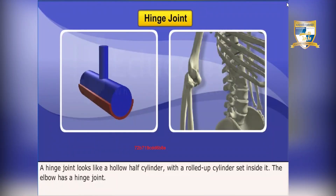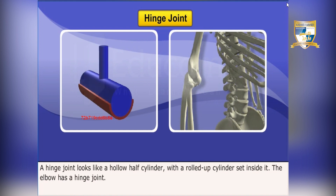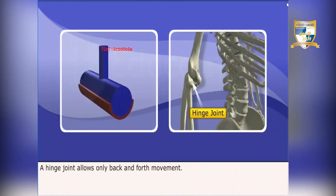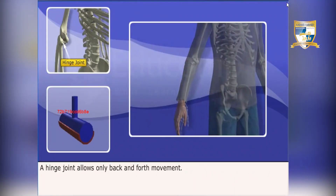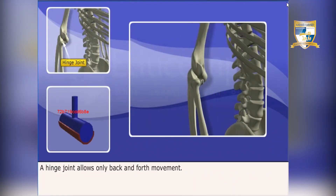A hinge joint looks like a hollow half-cylinder with a rolled-up cylinder set inside it. The elbow has a hinge joint. A hinge joint allows only back-and-forth movement.